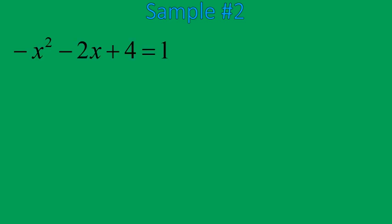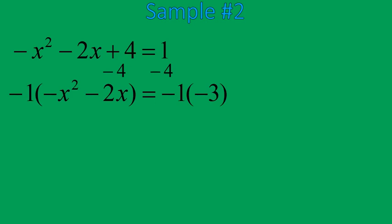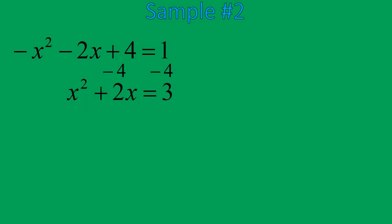Let's look at our second sample of completing the square. With this one, we do have a negative x squared, so we're going to have to deal with that. But first, let's simplify as much as we can by getting all of our numbers onto the left of the equal sign by subtracting 4 from both sides. To take care of that negative x squared, we multiply both sides of the equation by negative 1, which means every single term changes sign. So now instead I have x squared plus 2x is equal to 3.